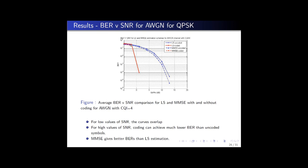We can see that the red curves, which correspond to the coded implementations, give much better performance compared to the least squares and MMSE uncoded. And as expected, the MMSE uncoded gives better performance, although marginally, than the least squares estimation method.